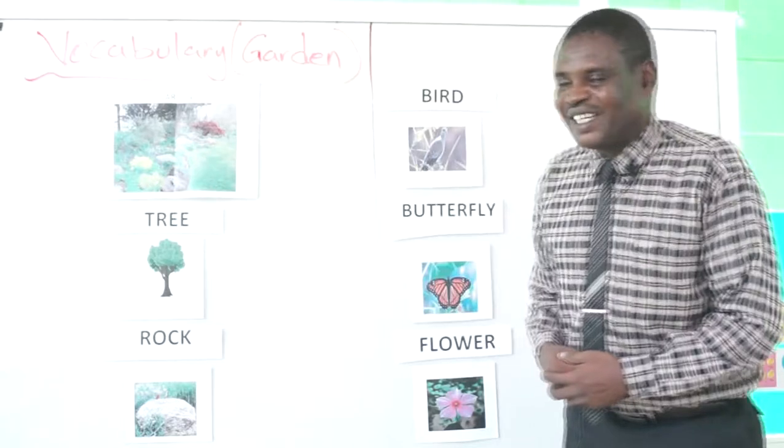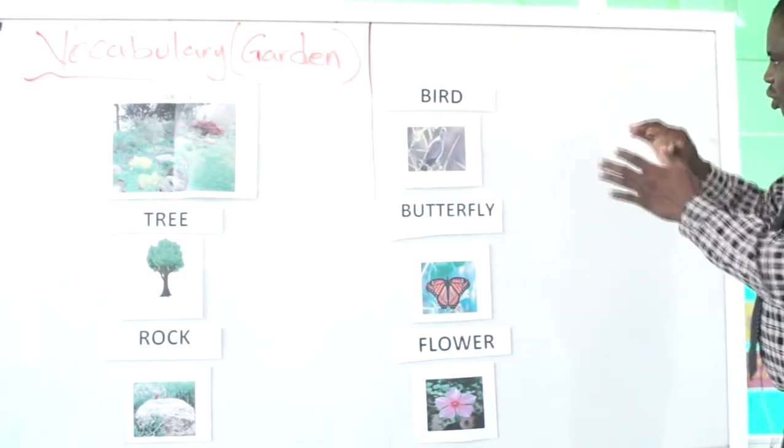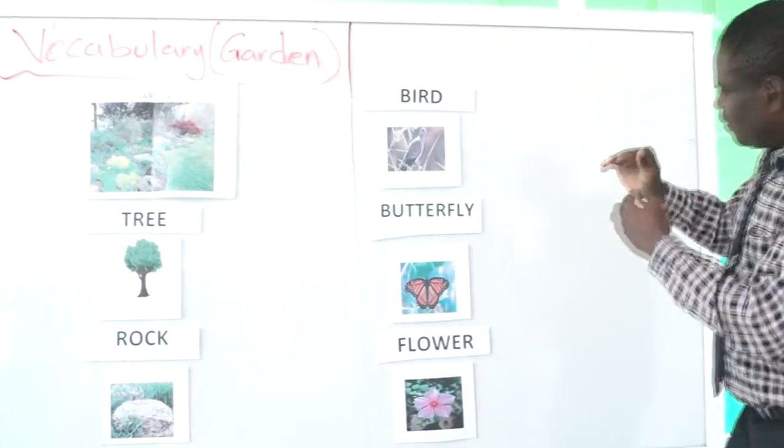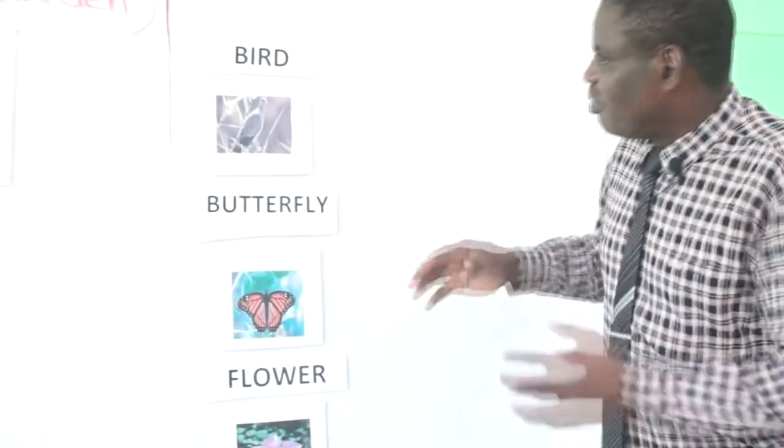We also have flowers which can also be seen in the garden. So far we have been able to identify these few things that can be found in this place.